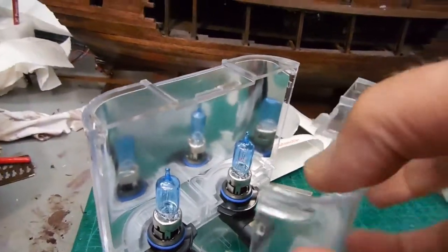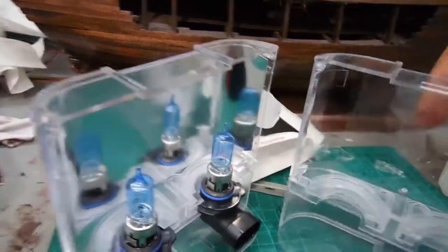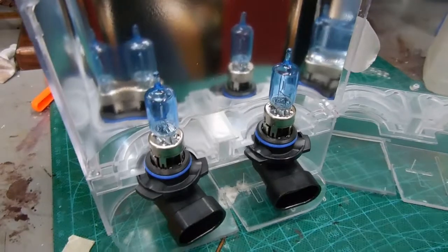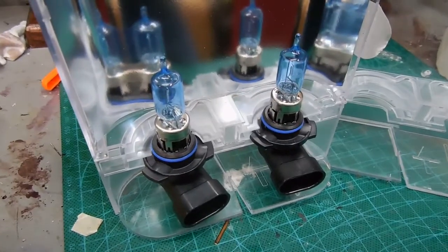So that was the trick. This just pivots out and gives you access to the lamps. You want to make sure to not touch any of the glass part of these bulbs, so I'll put on gloves to install them.